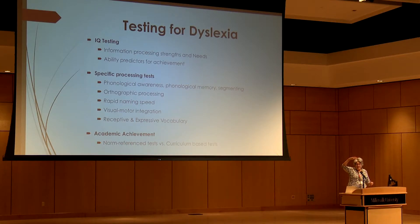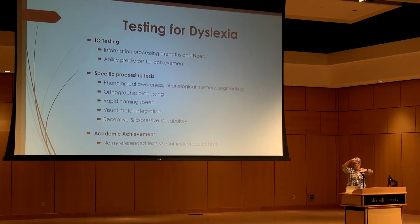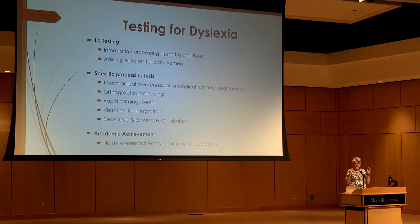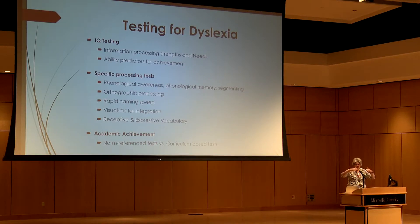It used to be that we would measure ability and achievement, and if there was a big discrepancy, we called it a learning disability. The problem was if we did something that worked and brought achievement up, the person no longer qualified even though they still had all the processing problems. The other problem with the discrepancy model is that you had to be in school long enough and fail enough to get far enough behind peers. So little kids were not identified and we couldn't do any prevention — it was a wait-and-see until third grade before we'd even test.